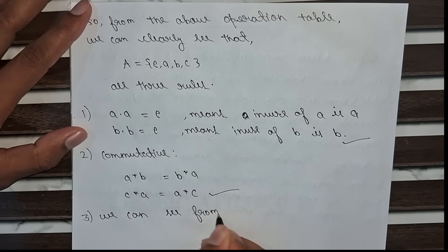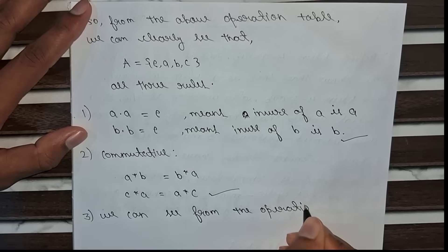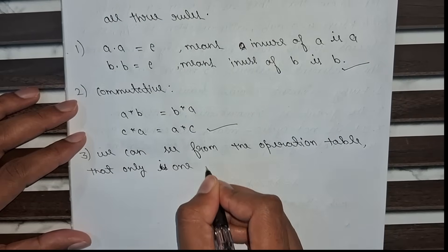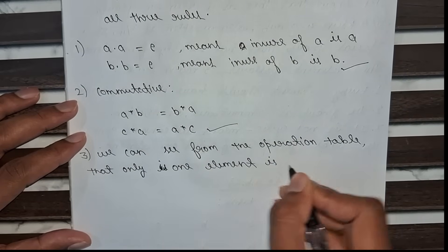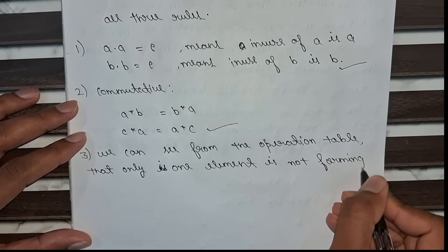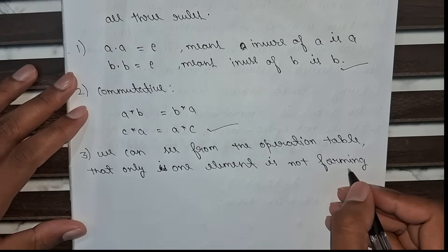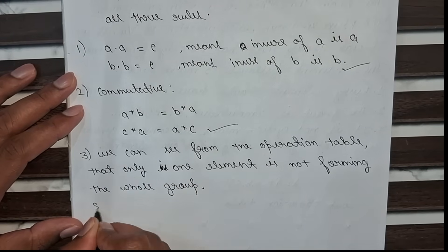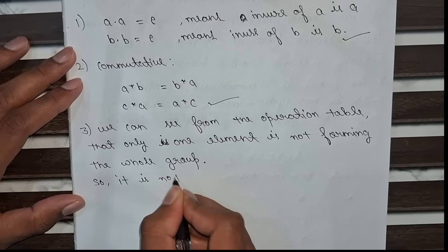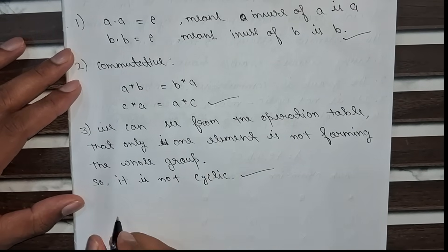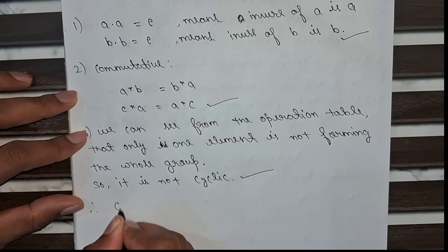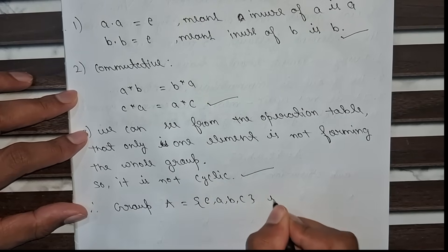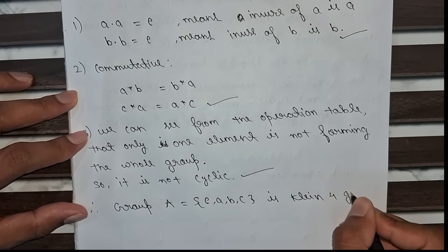For the third rule, from the operation table we can clearly see that no single element alone generates the whole group, so it is not cyclic. Therefore, the group A with elements {e, a, b, c} is a Klein four-group.